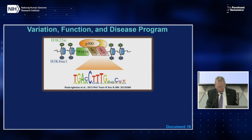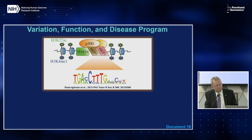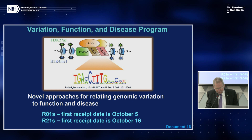NHGRI's new Variation Function and Disease Program supports the development of novel and generalizable approaches to study how genomic variants lead to differences in genome function, how such functional differences affect human health and disease processes, and how that knowledge can be used clinically. NHGRI recently released two program announcements to support investigator-initiated research, with the first receipt date of October 5th for R01s and October 16th for R21s.